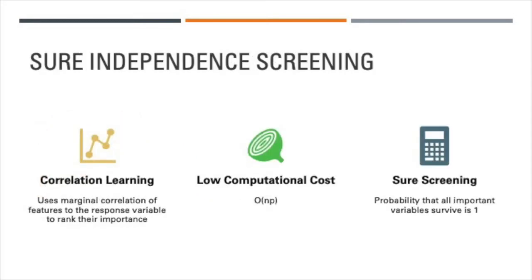The fundamental premise of this article, Sure Independent Screening, or SIS, is a broader variation of correlation learning, which ranks the importance of features according to their marginal correlation with the response variable, and uses the d highest ranked predictors to create the final model. SIS is applicable to generalized linear models, classification problems under various loss functions, and nonparametric learning under sparse additive models.